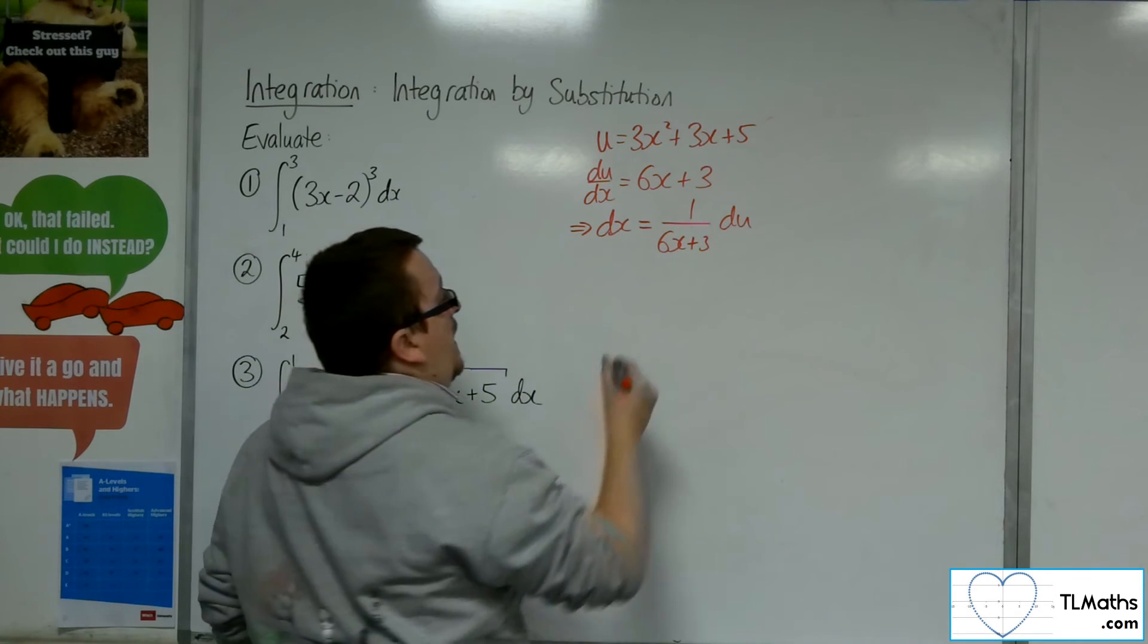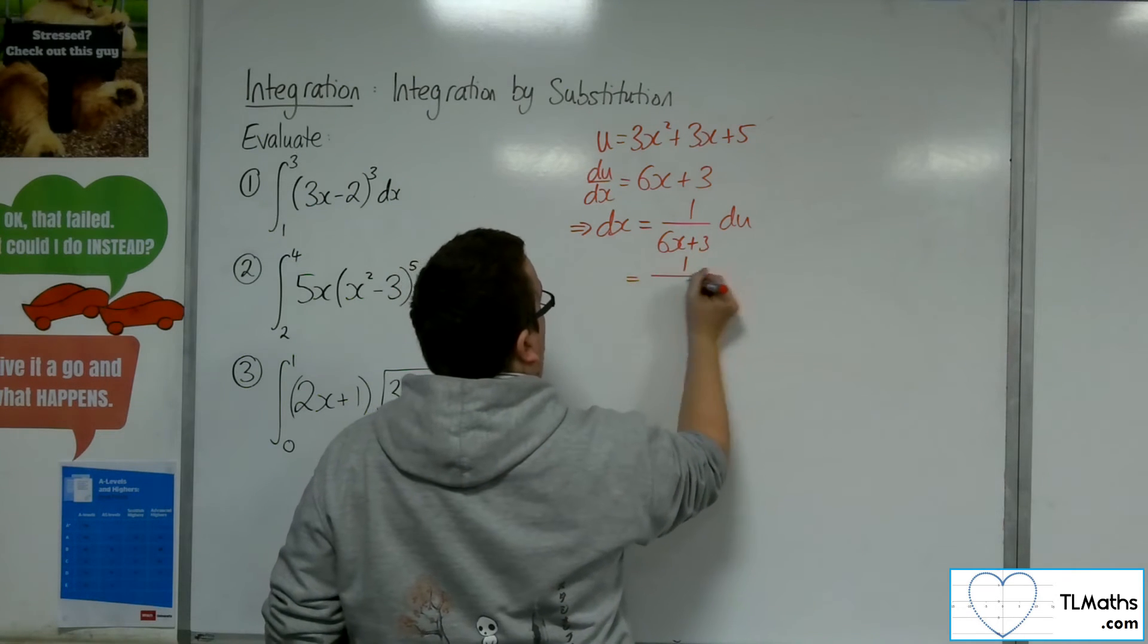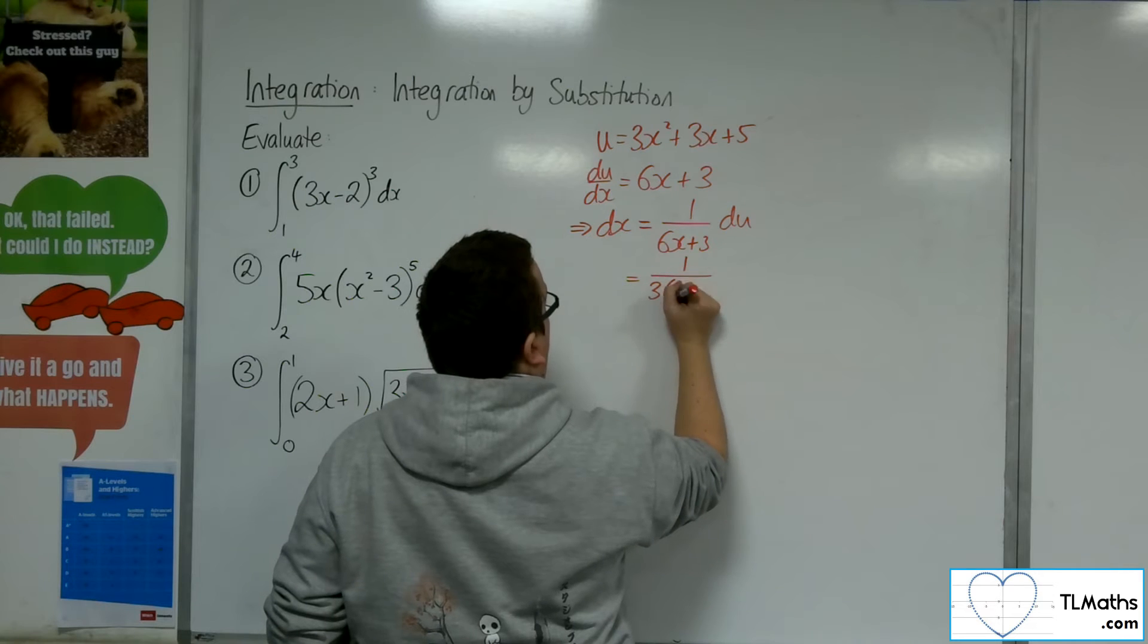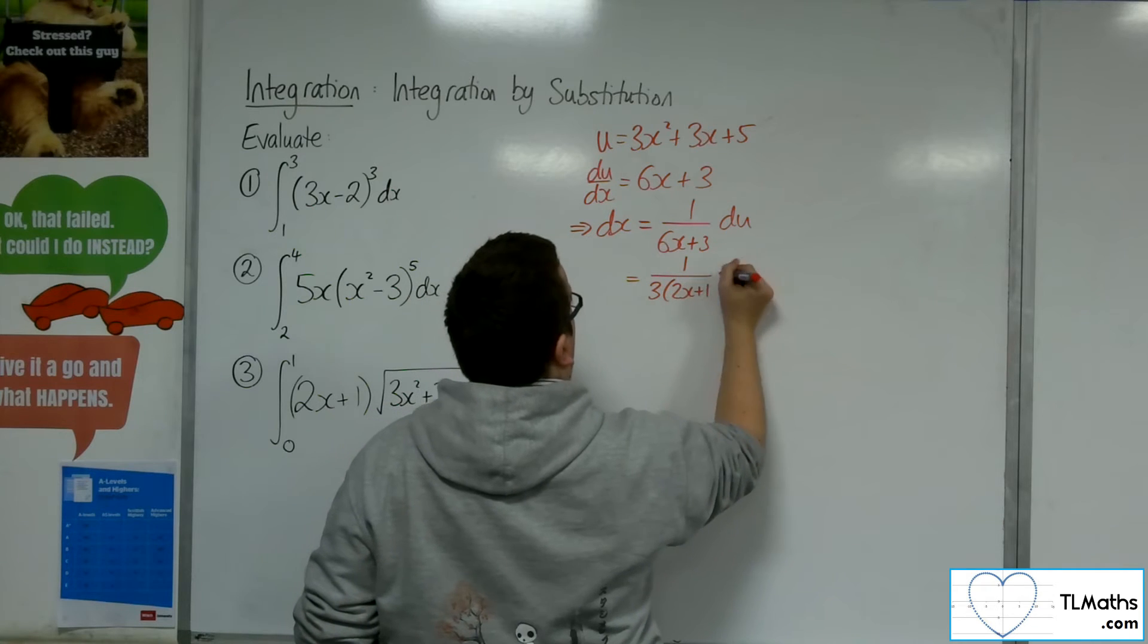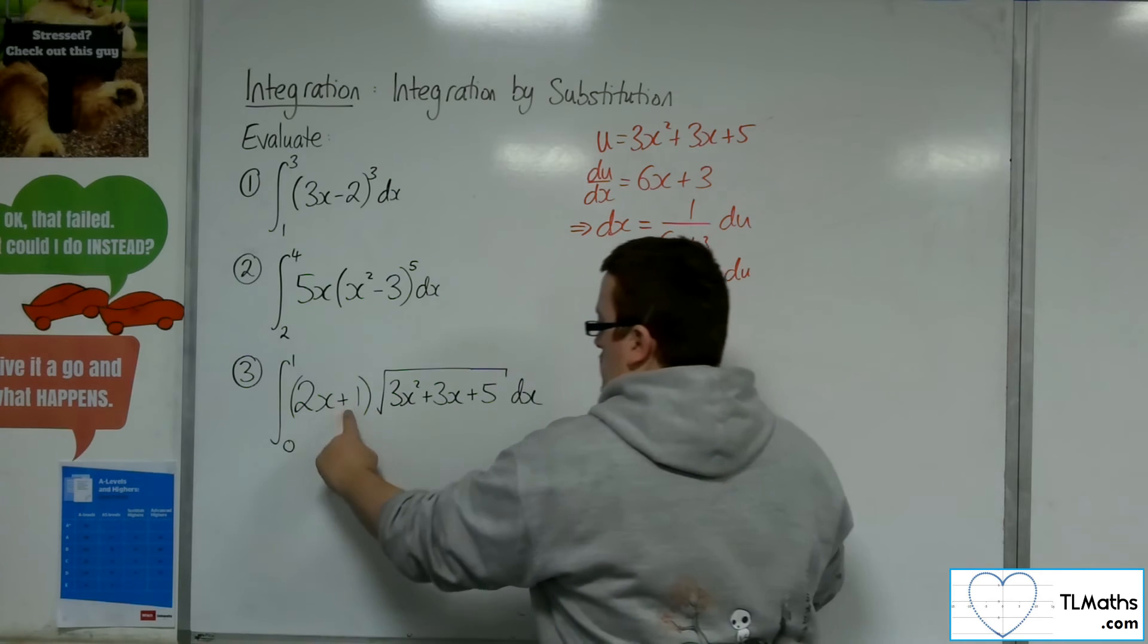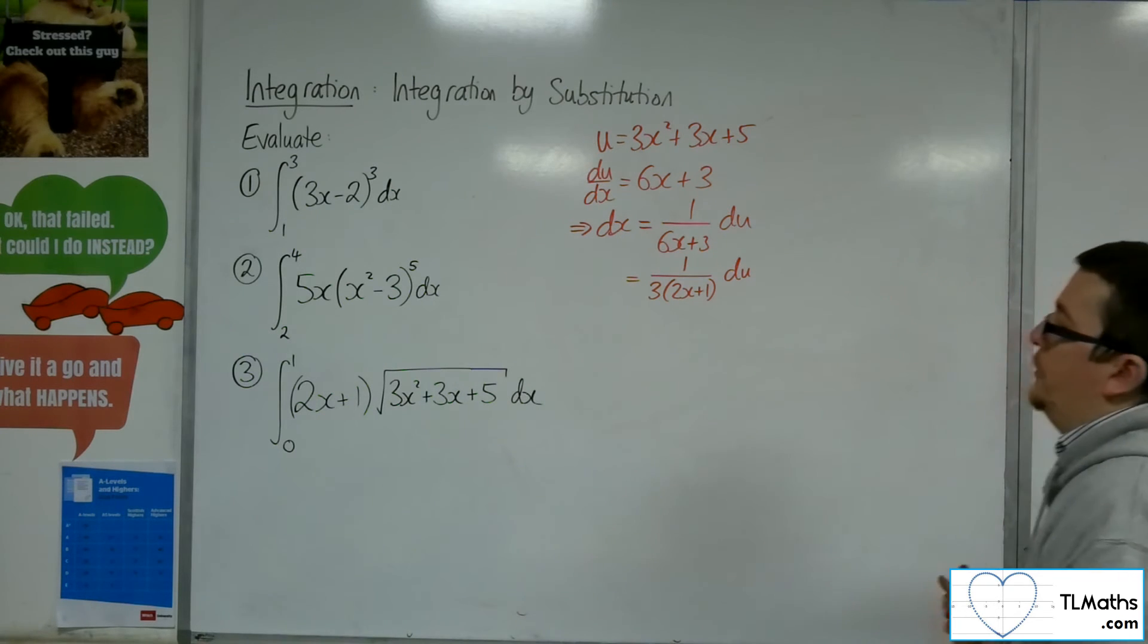Now I can write that alternatively as 1 over 3 lots of 2x plus 1 du. And there's a reason why I'm doing that.